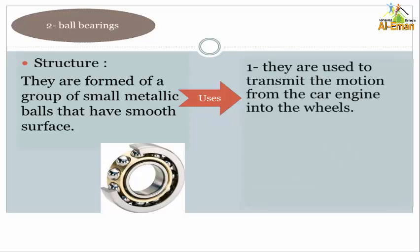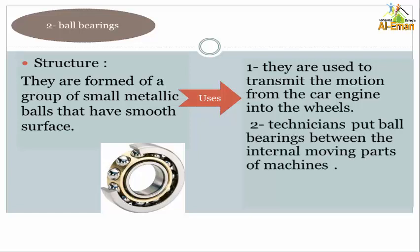They are used to transmit the motion from the car engine into the wheels. We place ball bearings between the internal moving parts of machines. Why? To decrease the friction force.